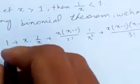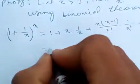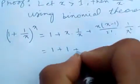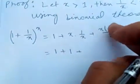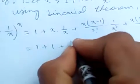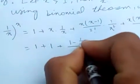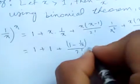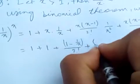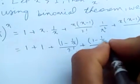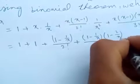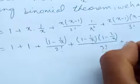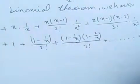Now we will simplify this. The first terms give 1 plus 1. Then simplifying: we get (1 − 1/x) divided by 2 factorial, plus (1 − 1/x)(1 − 2/x) divided by 3 factorial, and so on, up to infinity.